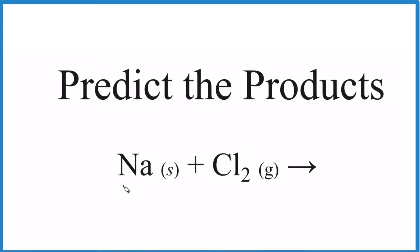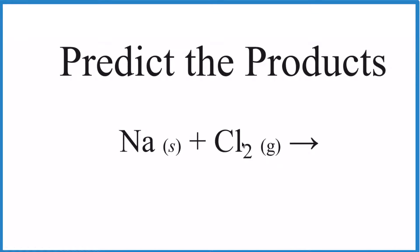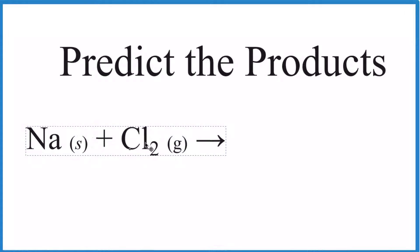Let's predict the products for the reaction of Na plus Cl₂. To do this, the first thing we need to recognize is that we have two different atoms coming together, so it's probably going to be a combination reaction.